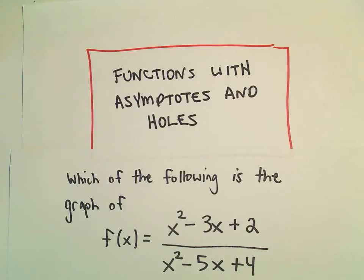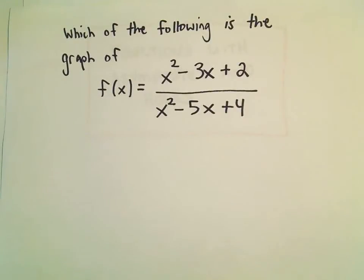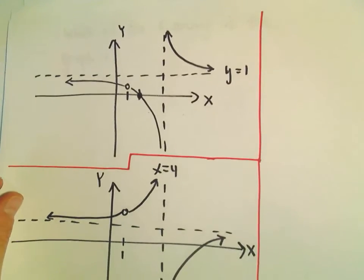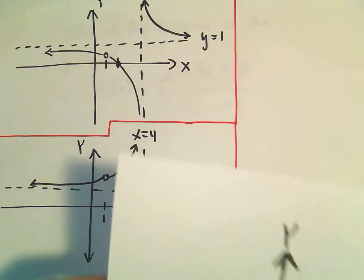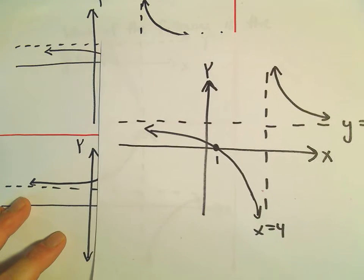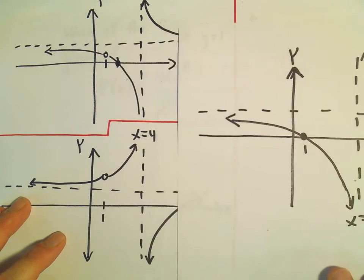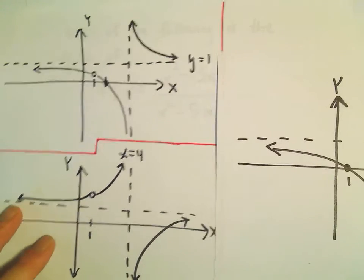All right, suppose we've got a function here, x squared minus 3x plus 2 over x squared minus 5x plus 4. And suppose we have a couple different graphs. So there's two of them. I think we can squeeze the other one in here in just a second. Suppose we've got three different graphs, and we want to figure out which one's correct.